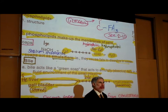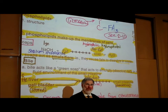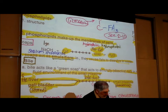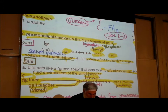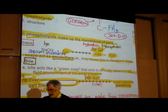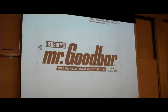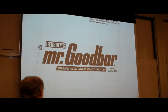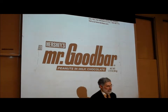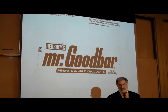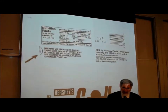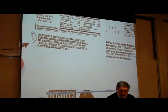Emulsifiers are commonly found in foods. I want to give a couple of examples of emulsifiers in foods. I've reproduced the wrapper of a large Hershey Mr. Goodbar — milk chocolate with peanuts. Let's take a look at the ingredients.